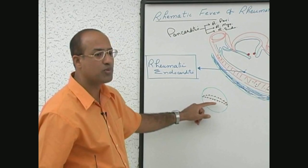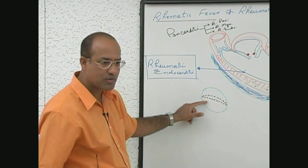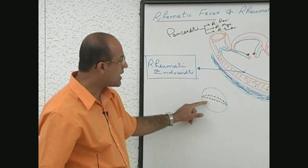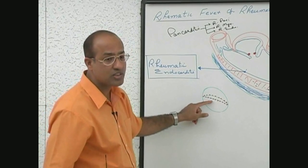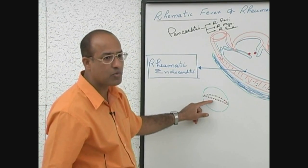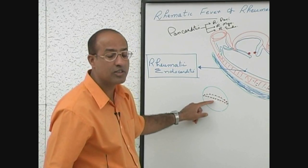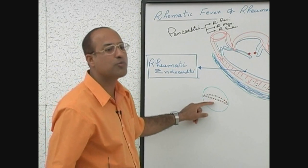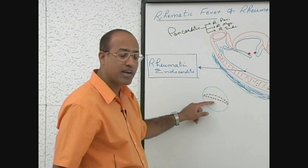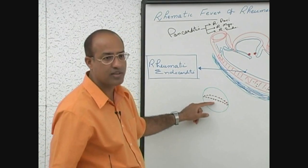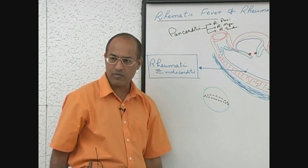Multiple small vegetations form along the line of closure of the valve, consisting of fibrin and platelets. These vegetations are held very tightly and don't embolize. Rheumatic vegetations don't break away - remember. Other vegetations like infective endocarditis vegetations break away, but rheumatic vegetations don't break away.